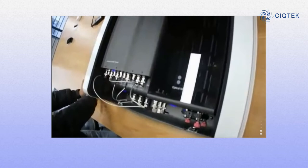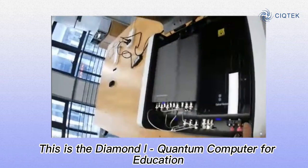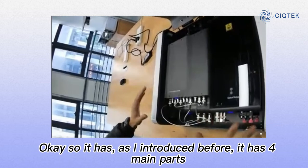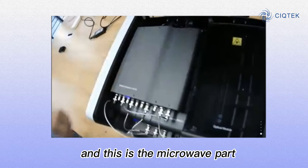This is the Diamond I Quantum Computer for Education. As I introduced before, it has four main parts: the control and the opposition parts, the microwave parts, the optical parts, and the power supply.